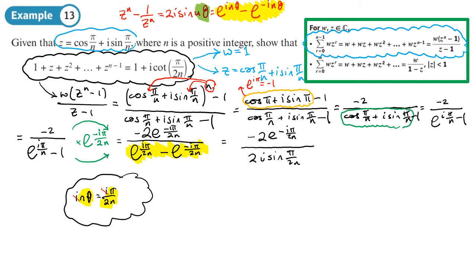We're almost done — just simplifying. The 2s cancel out, leaving −1 over i times e^(−iπ/2n) over sin(π/2n). Now −1 is the same as i², and i²/i = i. So the top becomes i·e^(−iπ/2n) over sin(π/2n).